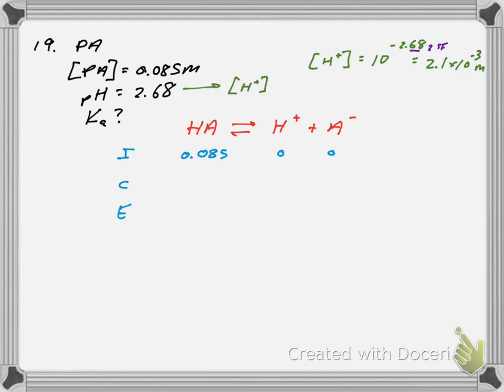Well, then that gives me, under the initial concentration of H plus with zero, final is 2.1 times 10 to the negative 3. So it must have changed positive 2.1 E negative 3. That means the anion concentration went up by the same amount. And because it's a one to one ratio, the acid concentration went down by that same amount. And so my final concentration of HA is the difference of those 0.0829. And again, my KA expression,